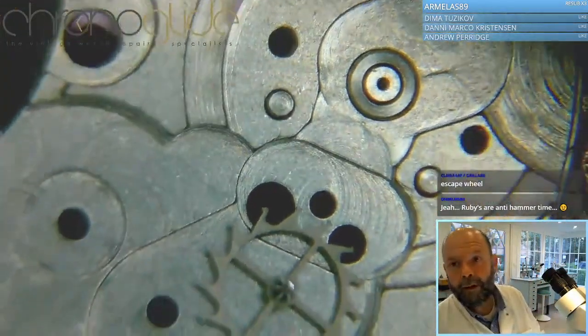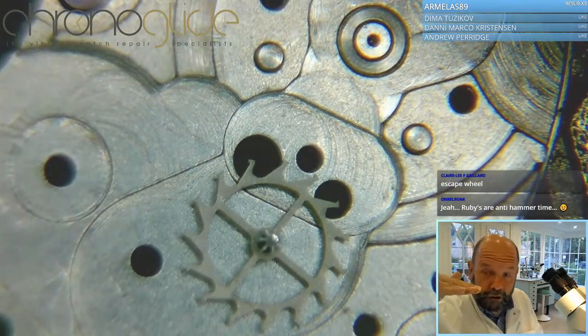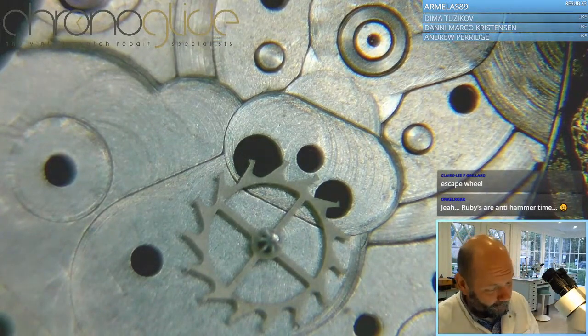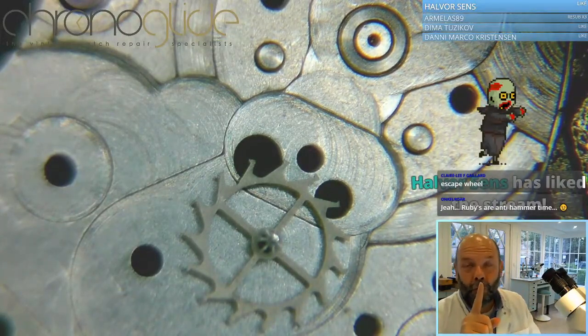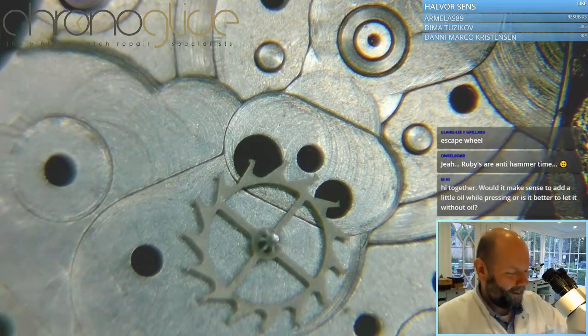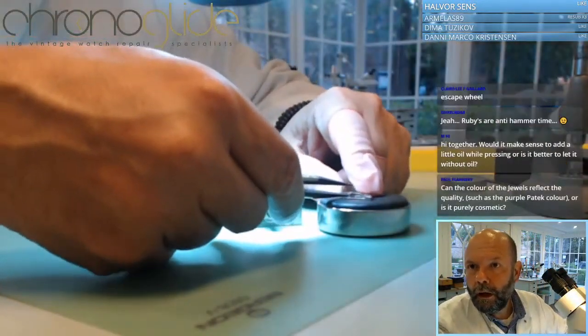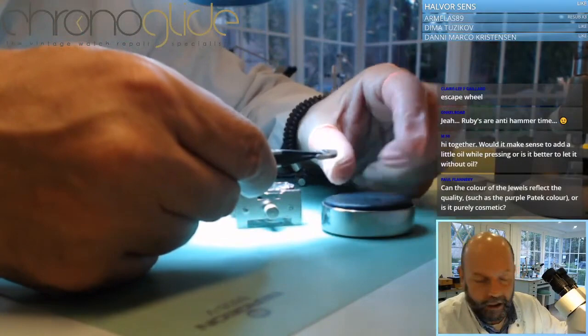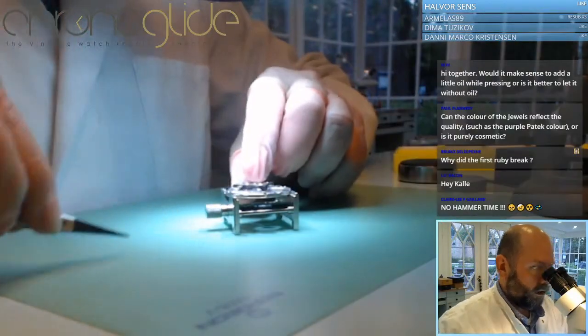There is the escape wheel in place. Now with the bridge on top, I need to see if the bridge is not going to have play. You have to be very careful because we measured the pivots at 0.08 millimeters, which is kind of small. I do it without oil because we are going to rinse all parts before assembly.